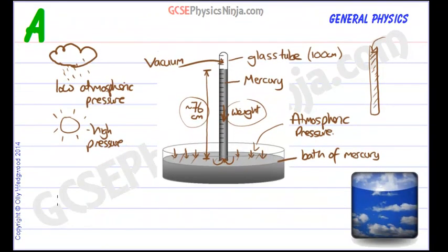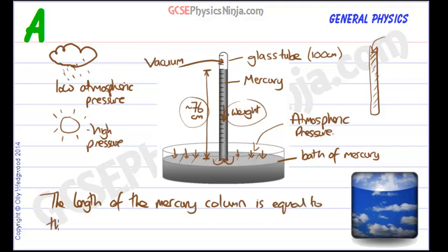We really only need to add that the length of the mercury column is equal to the pressure exerted by the atmosphere. And from that we can predict what kind of weather is likely around the corner.